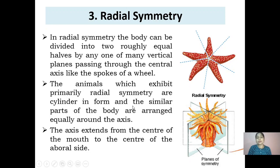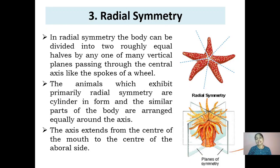Animals which exhibit primarily radial symmetry are cylindrical in form, and the similar parts of the body are arranged equally around the axis. The axis extends from the center of the mouth to the center of the aboral side — the side where the mouth is located is referred to as the oral side, and the side away from the mouth is the aboral side. Best examples are starfish and cylindrical forms like hydra and sea anemone, which have a mouth forming the center and can be cut in different planes along the center.